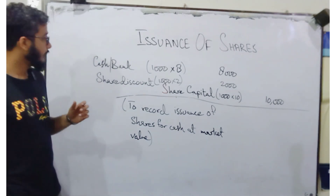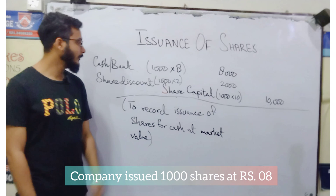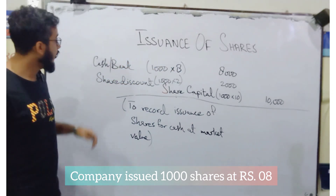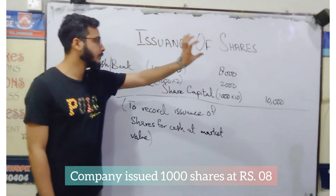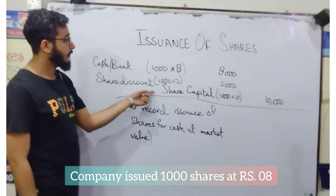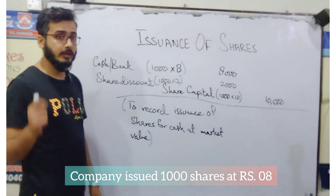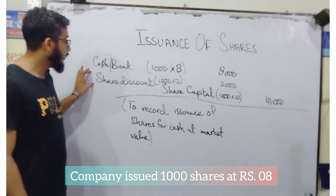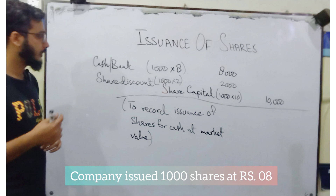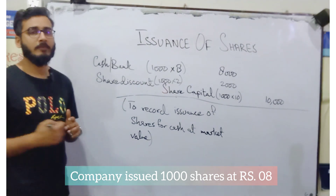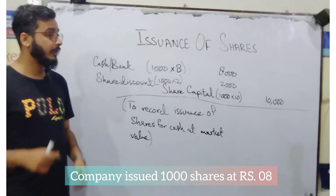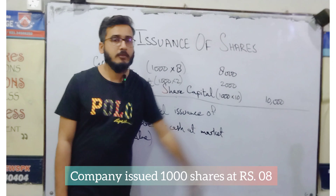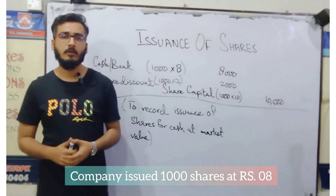Entry number three: shares are issued at market value but less than the par value. We have received rupees 8 per share. For 1,000 shares at 8, we received 8,000 in bank. Share capital is credited with 1,000 multiplied by 10 equals 10,000. But the equity will be decreased because the share is issued less than the par value — that is called share discount. The difference amount of 1,000 multiplied by 2 equals 2,000 shall be part of share discount, and it is debited since equity is being decreased.